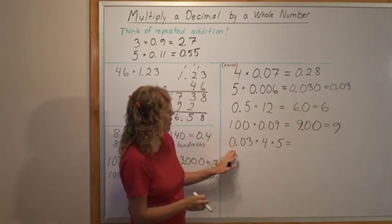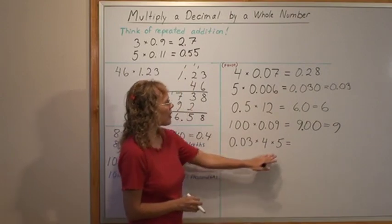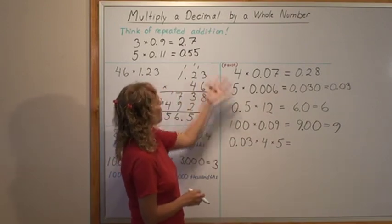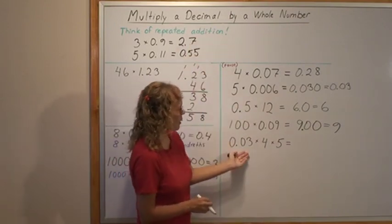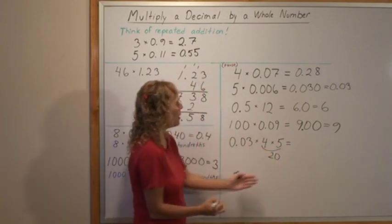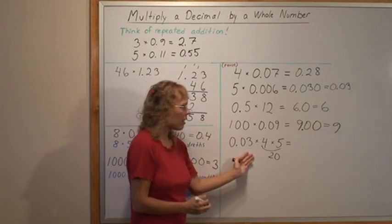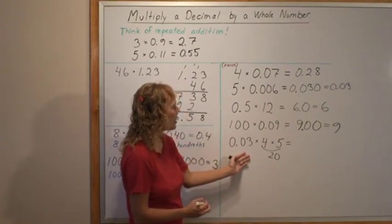My last problem is 3 hundredths times 4 times 5. This is still a similar problem to all these others. It's still a decimal times a whole number because these two make a whole number, 20 right? Whole number times a decimal. So 20 copies of 3 hundredths. We can go 20 times 3 is 60.